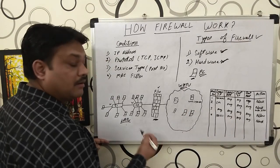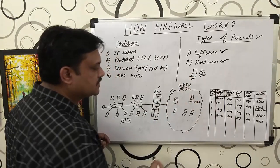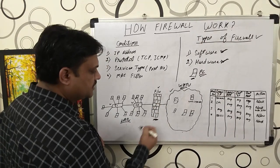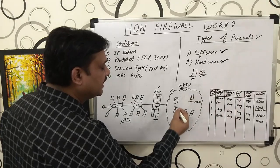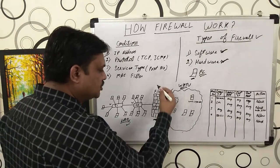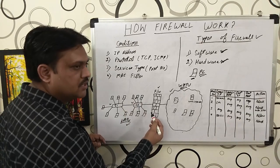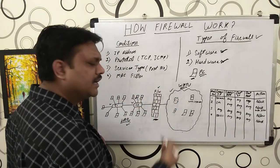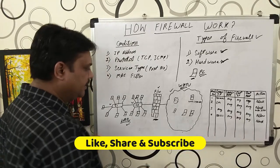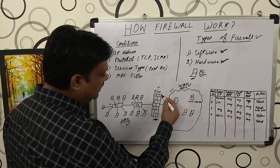Why do we install the firewall between the private network and the public network? Because the internet is an unsecured network. If we don't use this firewall, every hacker in the network — unauthorized users — will try to access your local area network. They will try to steal your personal data and then sell it to someone else to earn money. That's the reason they keep on hacking.